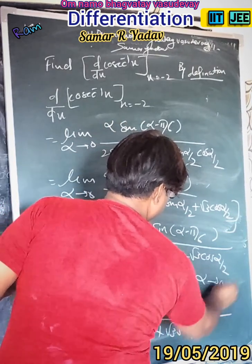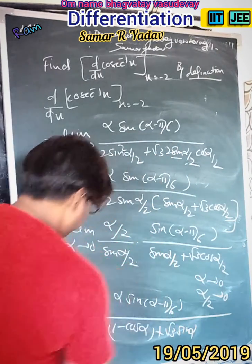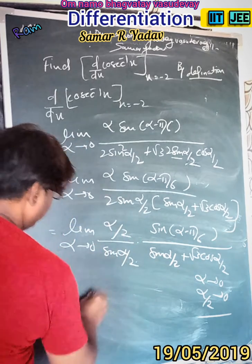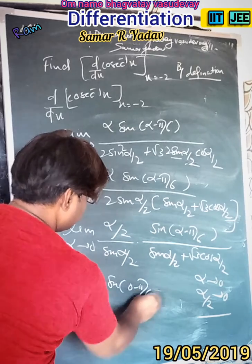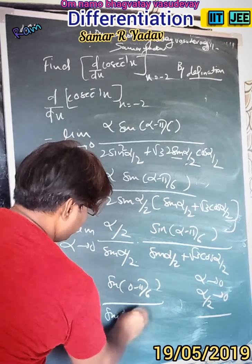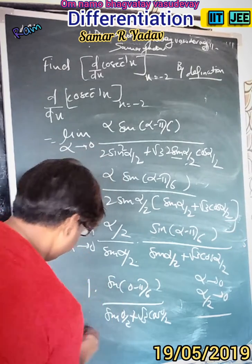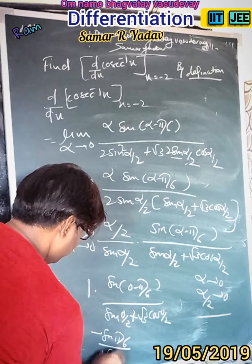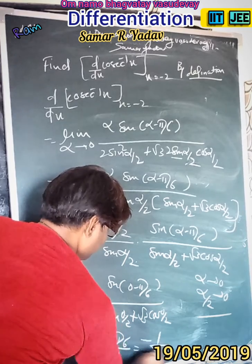As α tends to 0, α/2 also tends to 0, so keeping this value, we get 1 times sin(0 - 5π/6) upon [sin(0/2) + √3·cos(0/2)]. This gives minus sin(π/6) upon [0 + √3·cos(0)], which equals minus 1 upon 2√3.